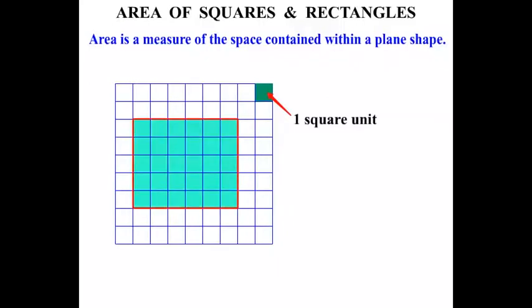This rectangle here, if we were to work out the area of that, let's count them up in squares: 1, 2, 3, 4, 5, 6. So 6 so far. Another 6 would be 12. Another 6, 18. Another 6, 24. Then another 6 would be 30. We would say that that rectangle has an area equal to 30 square units.